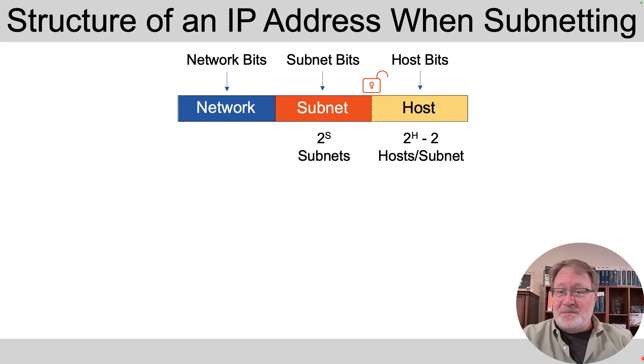Let's get into the specifics. If you think classfully, and you're starting with a class A, B, or C network, and you're subnetting it, you can think of course as three separate parts of the address structure: a number of network, subnet, and host bits.